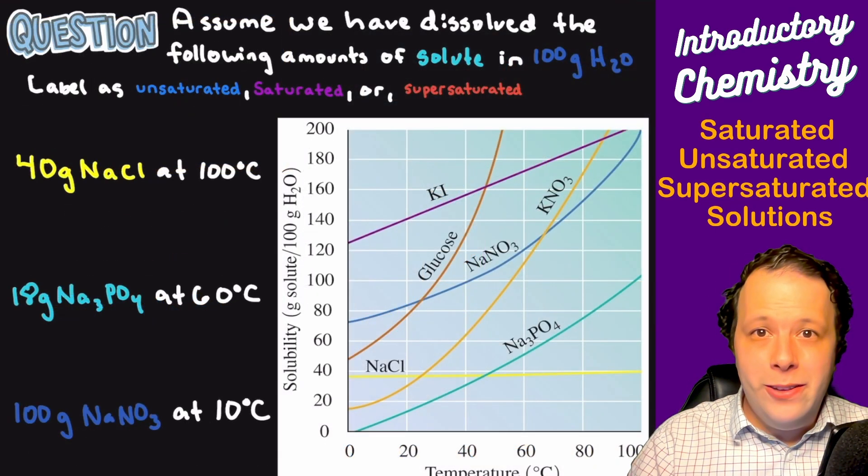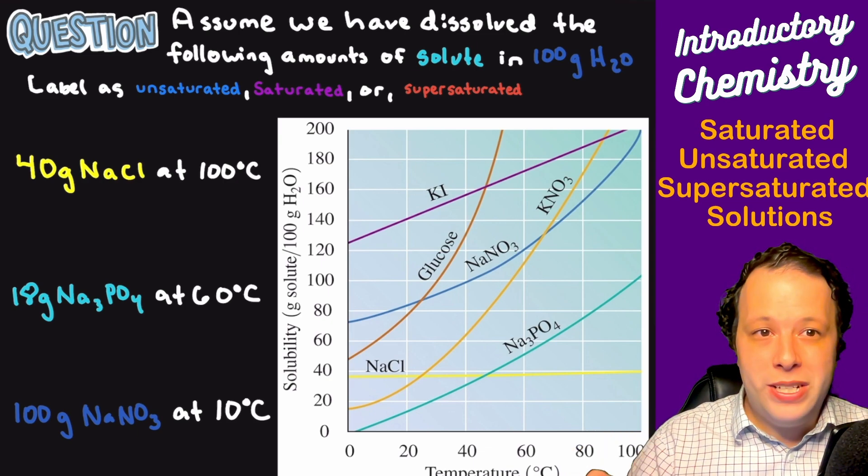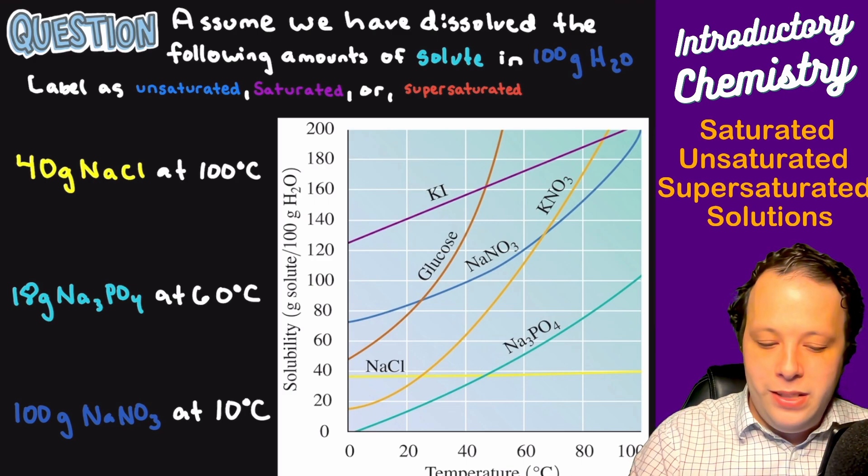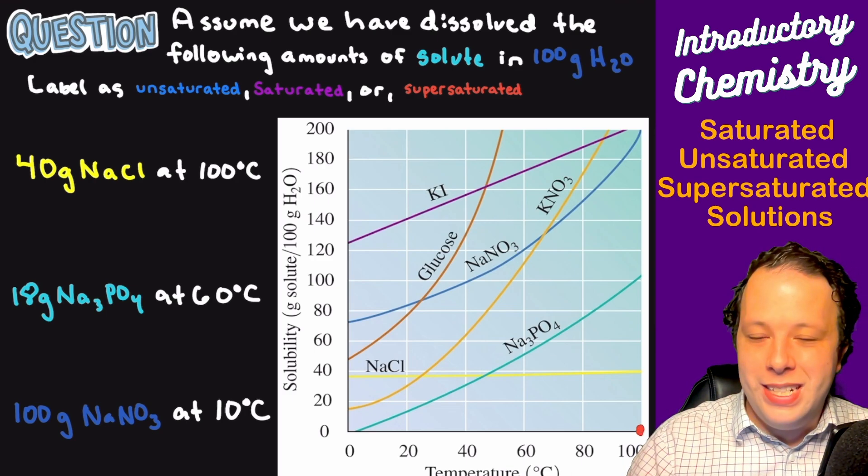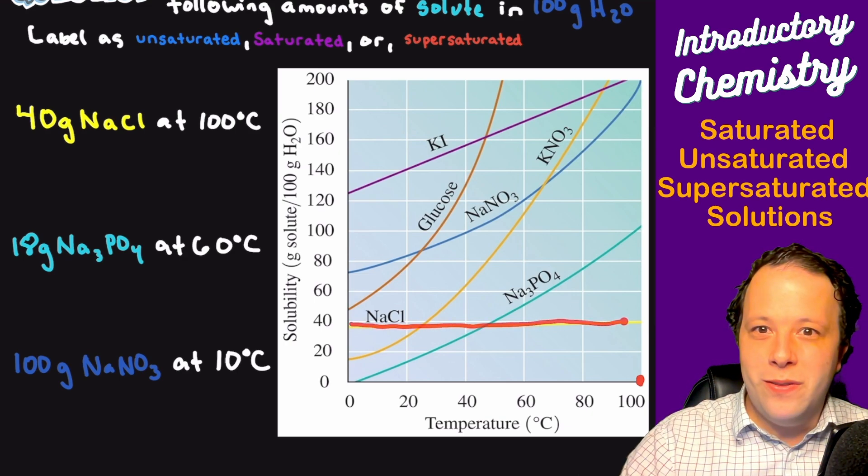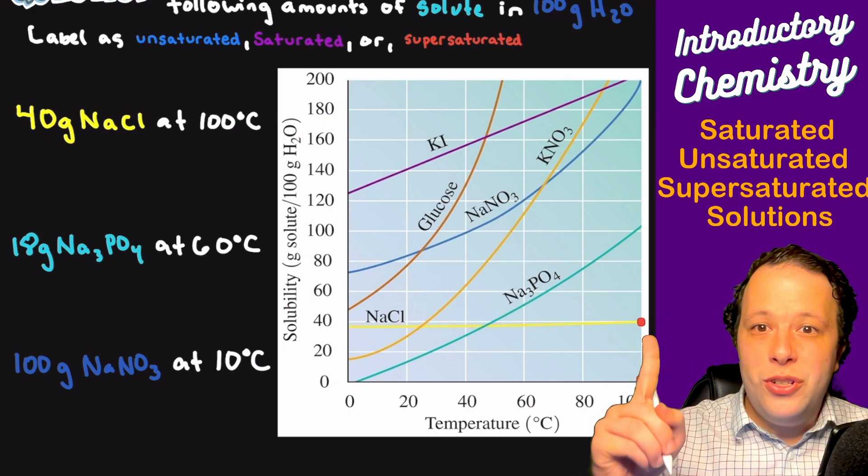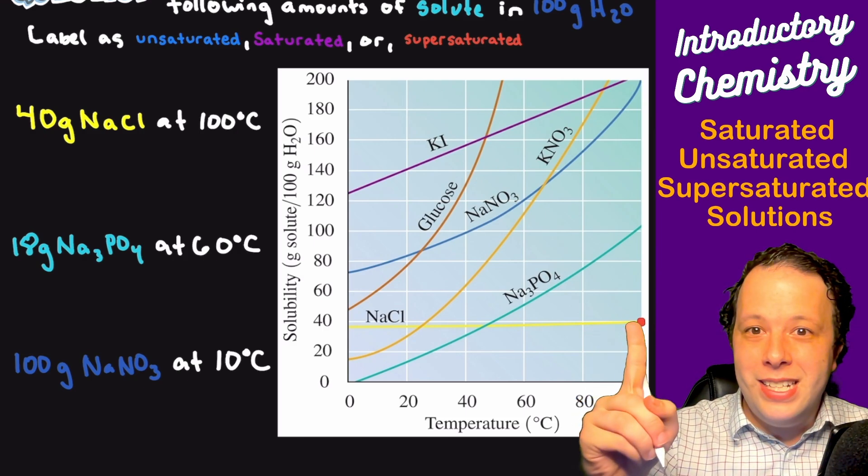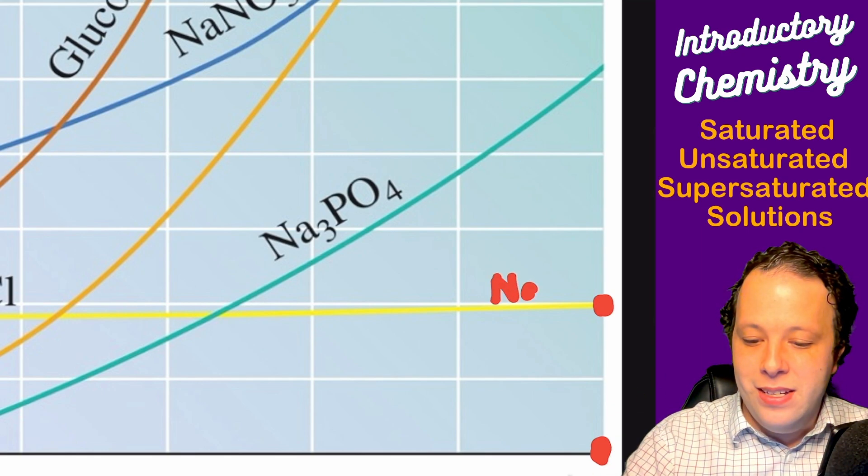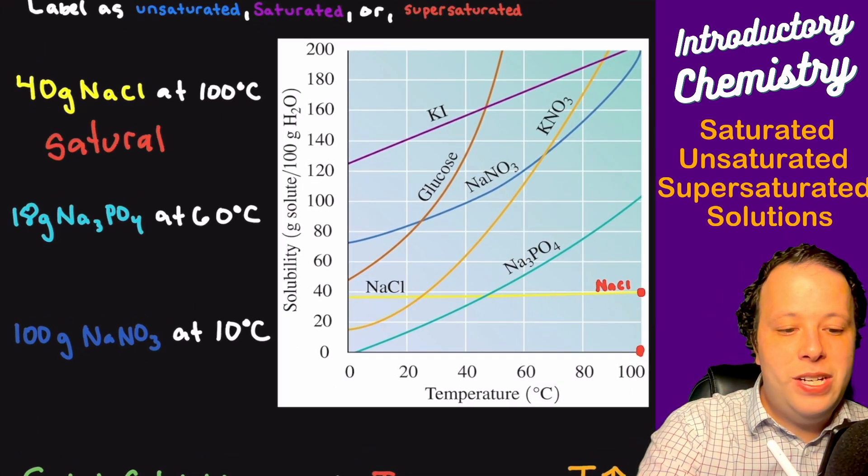Assume we have dissolved the following amounts of solute in 100 grams of water. Label them as unsaturated, saturated, or supersaturated. The first one: 40 grams of sodium chloride at 100 degrees C. We see 100 degrees C right at the corner of the screen. We are going to take that all the way to NaCl which is this yellow curve at the bottom. We're going to go to 40 grams. Those two points are meeting the yellow line. That tells you that this is the saturation limit for NaCl. NaCl is going to be saturated.